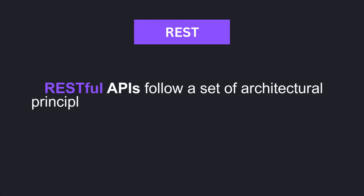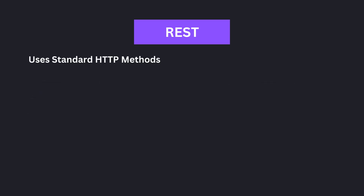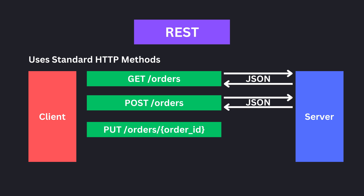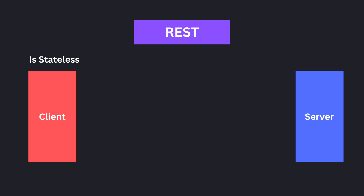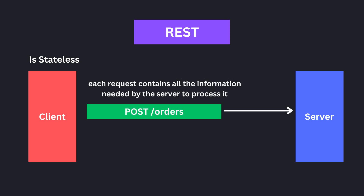RESTful APIs follow a set of architectural principles and constraints that dictate how the API should be designed. They use standard HTTP methods such as GET, POST, PUT, PATCH, and DELETE to perform operations on resources, and the data is usually returned in JSON format. RESTful APIs are stateless, meaning that the server does not store any client context between requests. Instead, each request contains all the information needed by the server to process it.